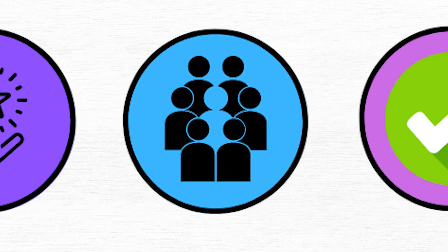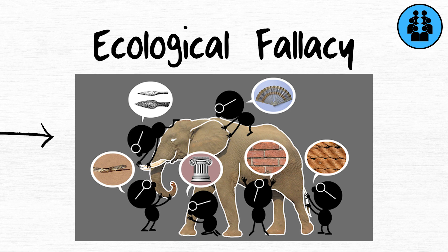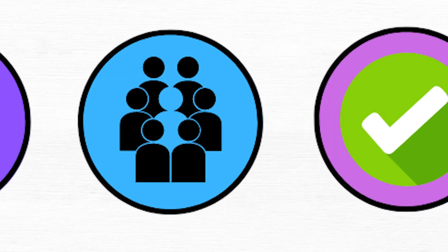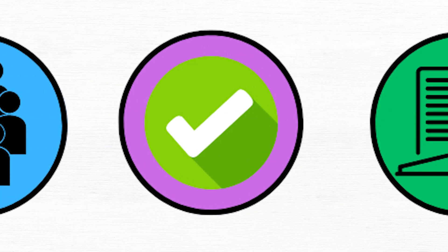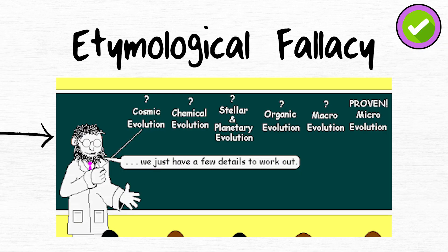Ecological fallacy. The ecological fallacy assumes population characteristics apply to individuals. Etymological fallacy. The etymological fallacy assumes a word's oldest meaning is its true meaning.